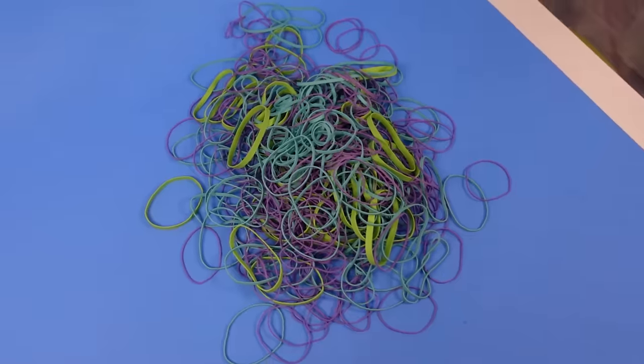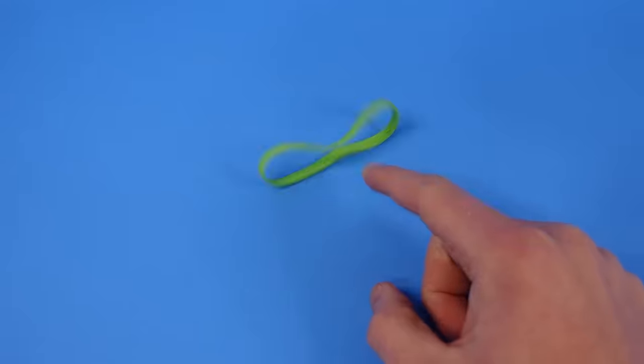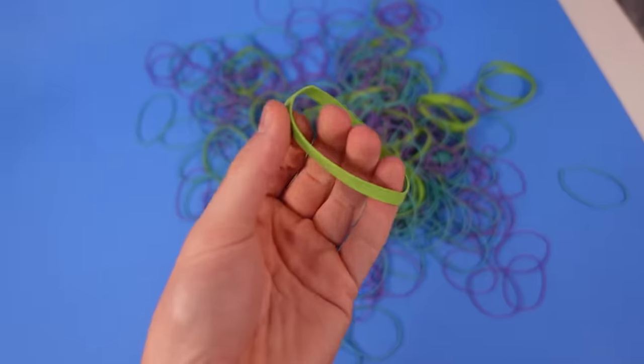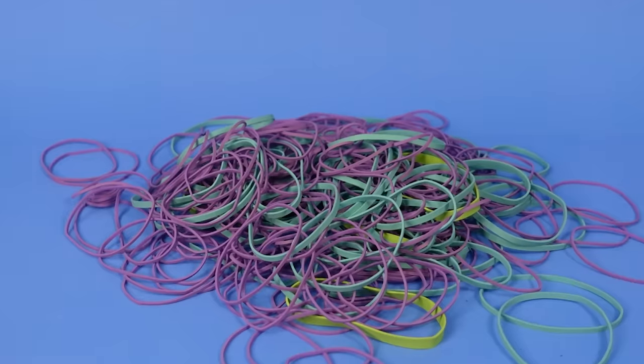What you're seeing is approximately 400 rubber bands. This is super satisfying, I'm not going to lie. Now the problem with rubber bands is that they don't really hold any particular shape. Instead, they just kind of flop around like a fish. Unless you bunch them up into a rubber band ball.